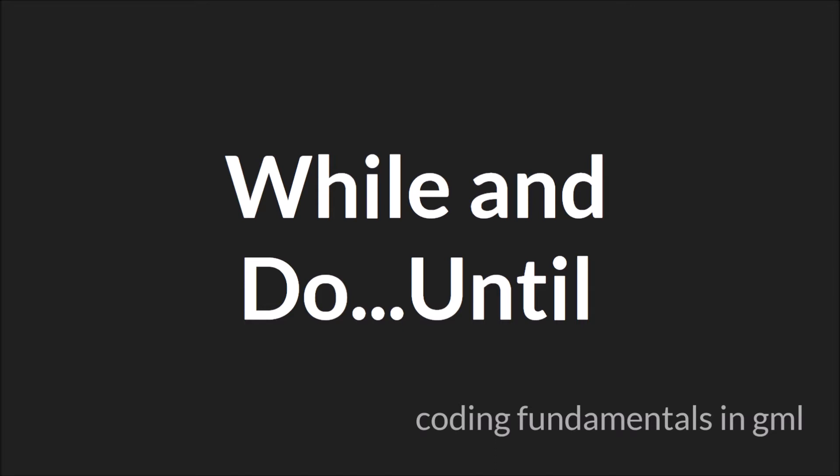In this tutorial, we are going to be talking about two different GameMaker Studio 2 loops, the while loop and the do-until loop. The reason we're covering both loops in the same tutorial is that they are very, very similar. There's only a couple of differences and we'll highlight those as we go.